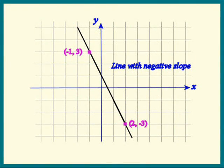Here's a picture of that line whose slope is -2. We see that as we move in the positive x direction, the y values are decreasing. The line is falling.